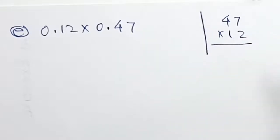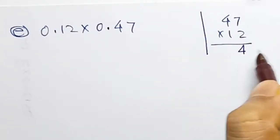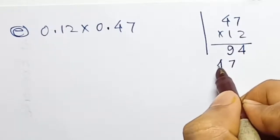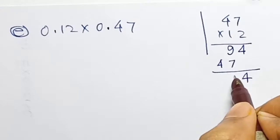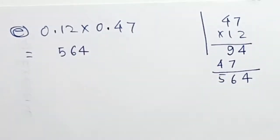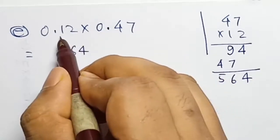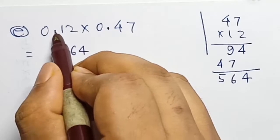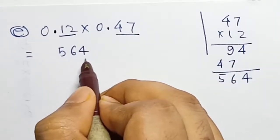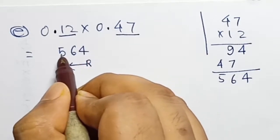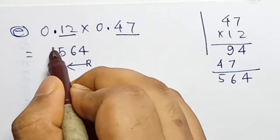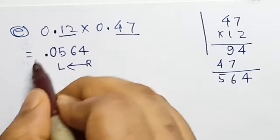0.12 into 0.47: just ignore the decimal and multiply 47 into 12. 2 into 7 is 14, carry 1; 2 into 4 is 8, 8 plus 1 is 9. Then 1 into 7 is 7, 1 into 4 is 4. Combining: product is 564. For the decimal point: count decimal places — 0.12 has 2, 0.47 has 2, so 2 plus 2 equals 4. Count 4 digits from the right to place decimal point.